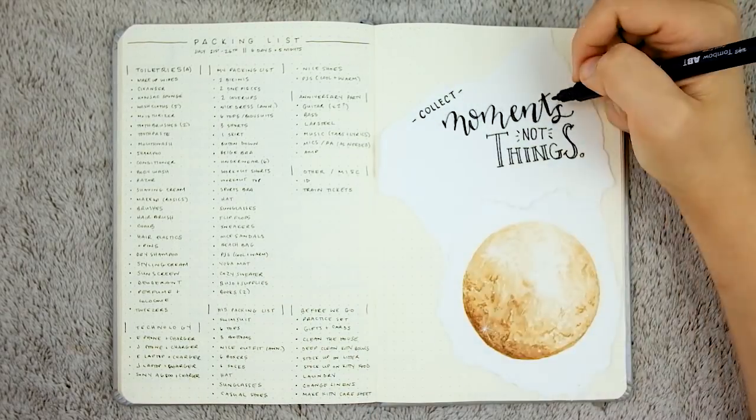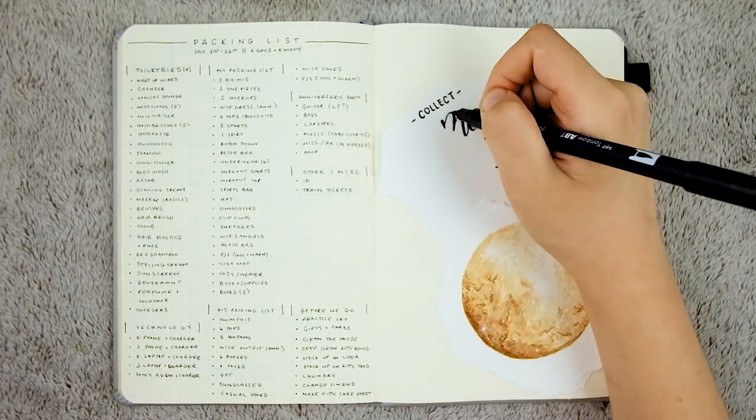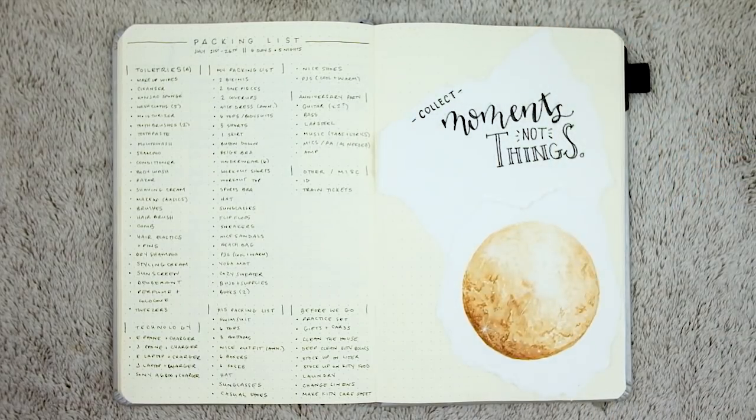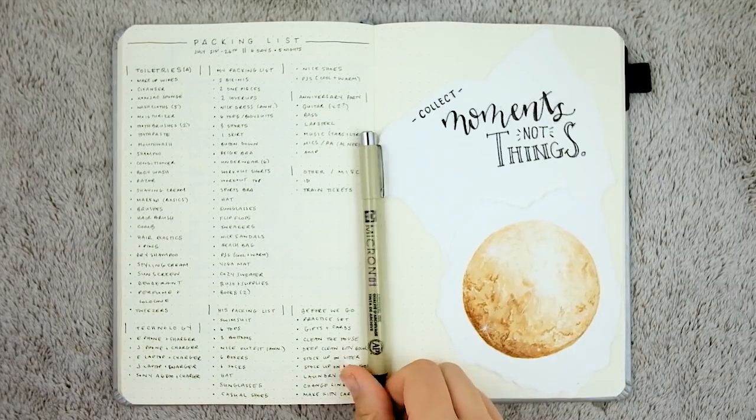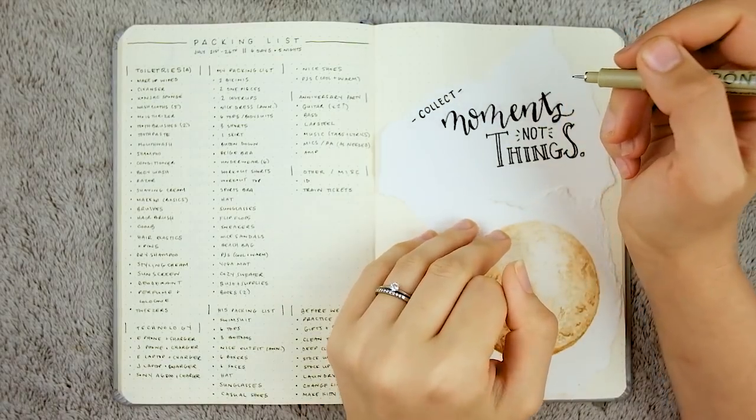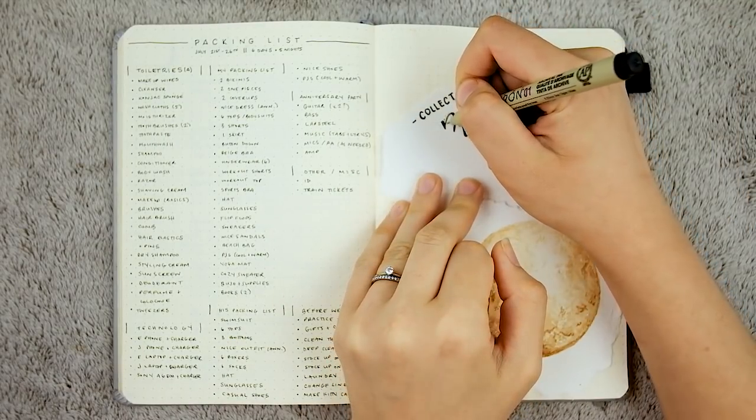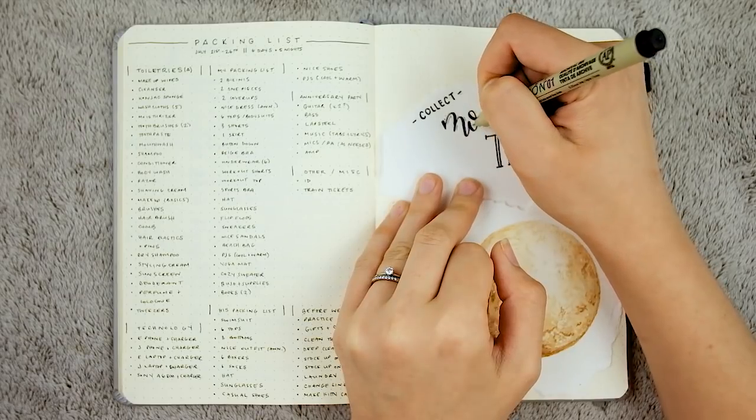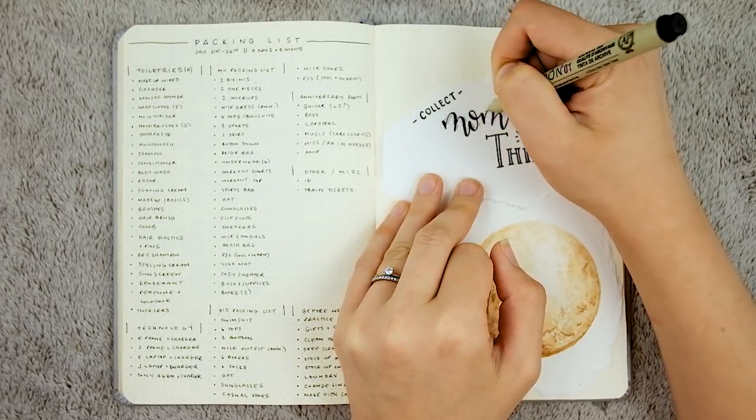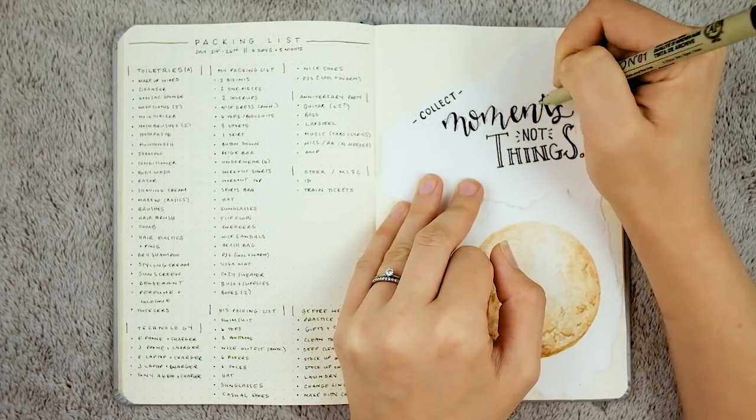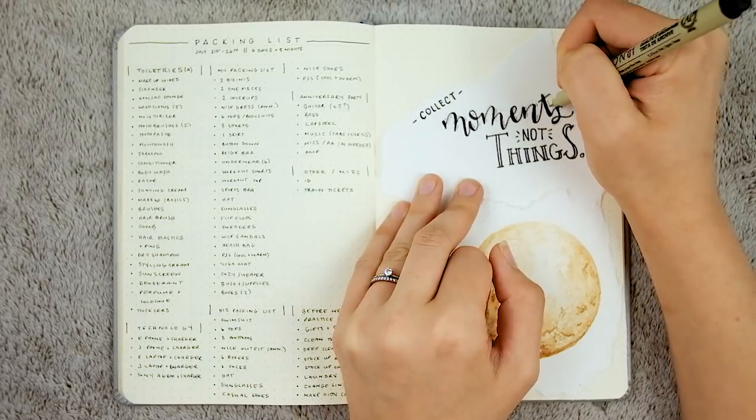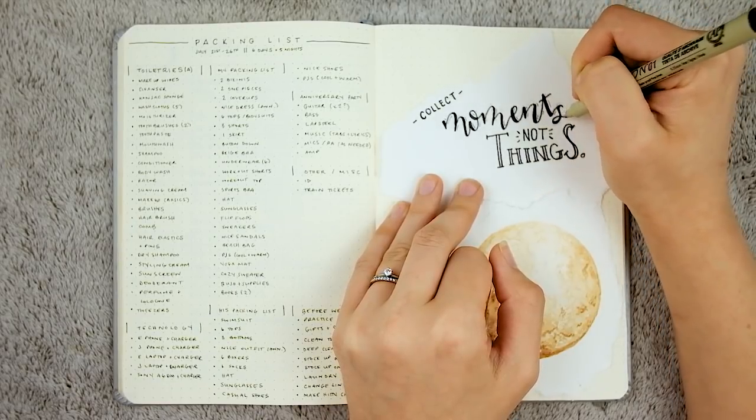Then I hand-lettered the quote 'Collect moments not things,' and I really, really like how it turned out. I tried to combine a variety of different fonts to play around with it—some block letters, some faux calligraphy using pens of different weights to give things different feel, and a bunch of little highlights around.